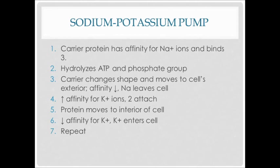The steps in which this occurs: a carrier protein has an affinity for sodium ions and binds three of them. It then hydrolyzes ATP and releases a phosphate group, creating ADP. The carrier protein will change shape and move to the cell's exterior; its affinity for sodium will decrease and sodium will leave the cell. At that same time, it has an increased affinity for potassium ions — two will attach, the protein moves to the interior of the cell, it has a decreased affinity for potassium ions, so the potassium enters the cell, and it continues to repeat.